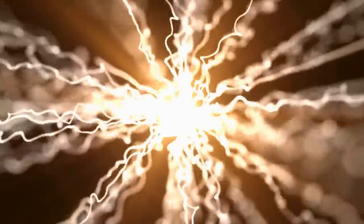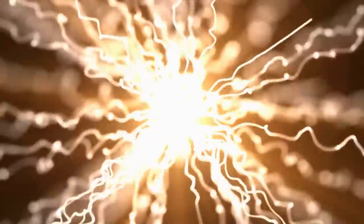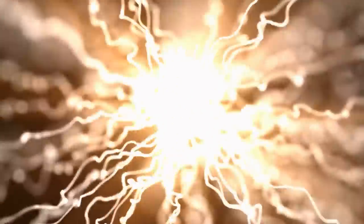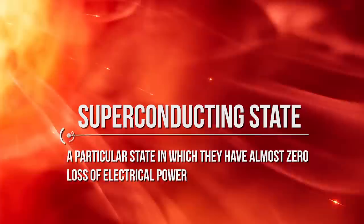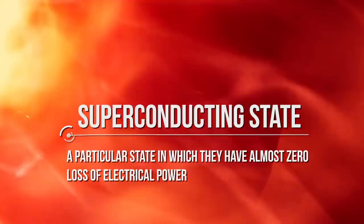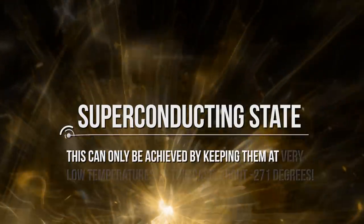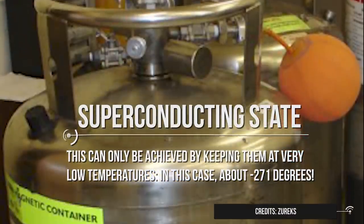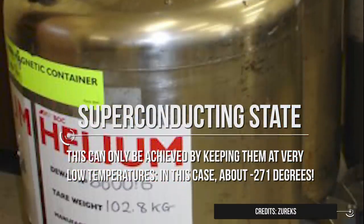However, in order to be able to create magnetic fields strong enough to deflect these high energetic protons, scientists need to use special magnets in the LHC. These magnets operate in the so-called superconducting state, a particular state in which they have almost zero loss of electrical power. This can only be achieved by keeping them at very low temperatures. In this case, about minus 271 degrees. Yes, you heard that right. This is why they must be constantly refrigerated using liquid helium, which allows to reach such extreme temperatures.